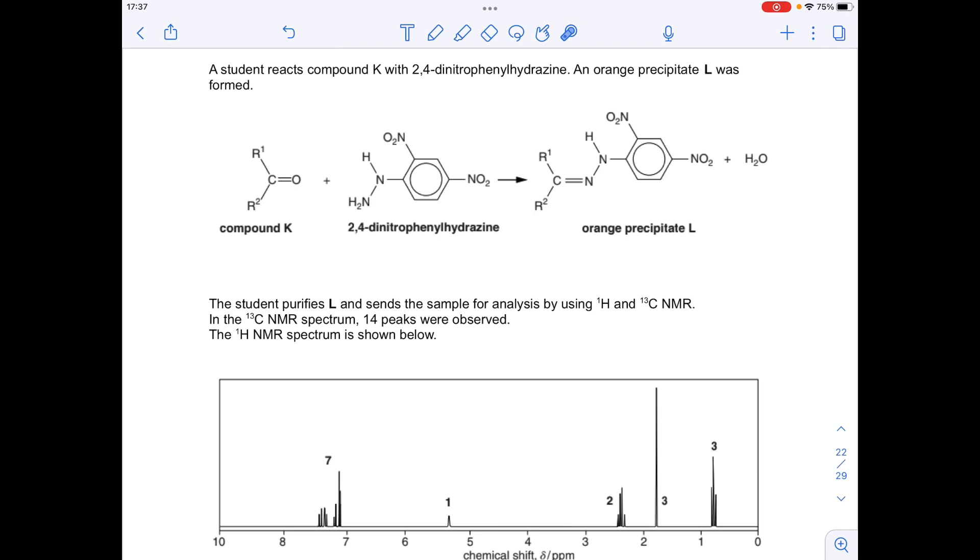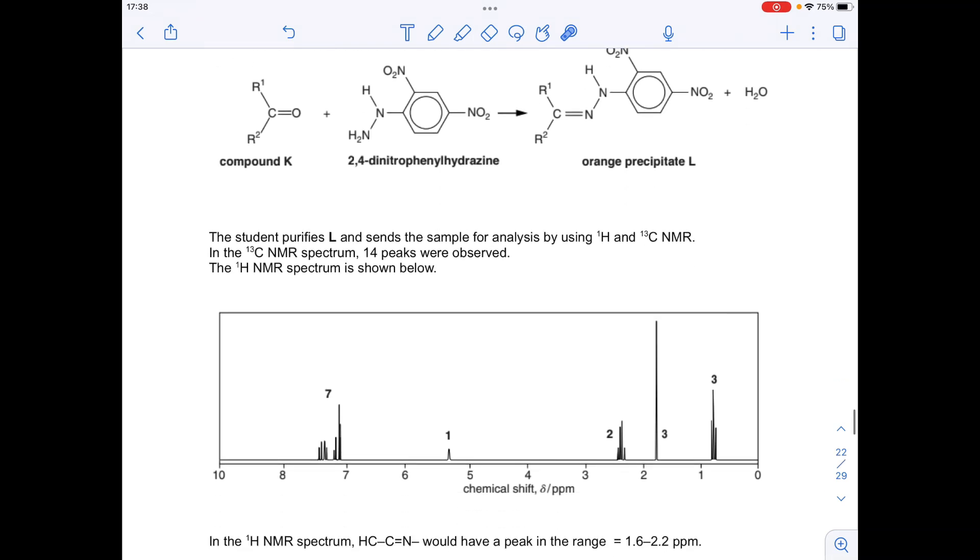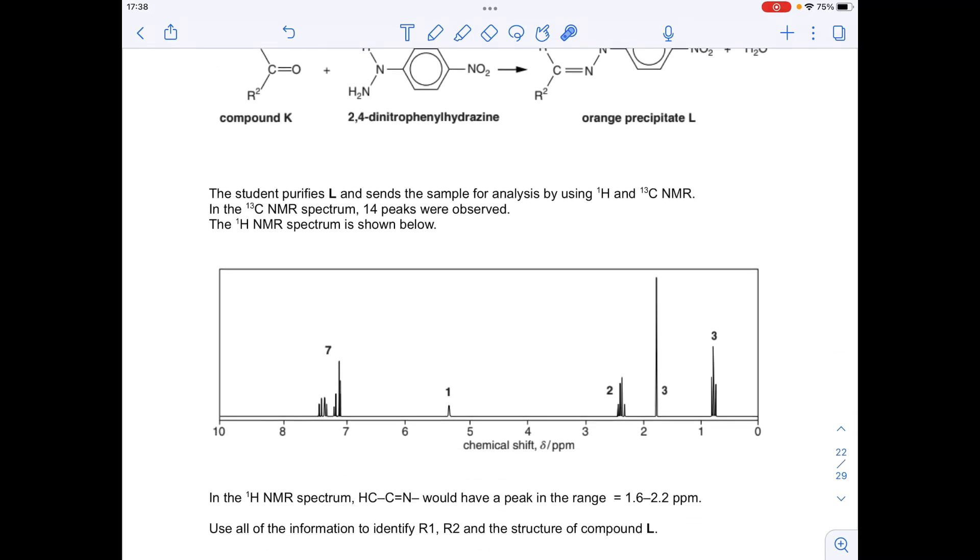But obviously the focus is going to be the proton NMR spectrum. And we've got this extra bit of information about this signal that isn't on the A-level data sheet. So a hydrogen bonded to a carbon that is then bonded to a C double bond N would appear in this region here.